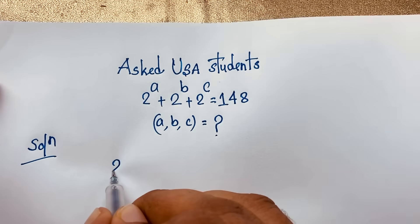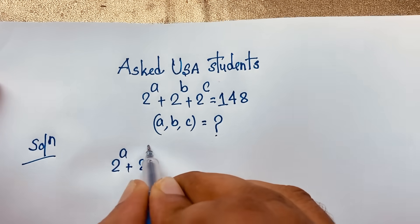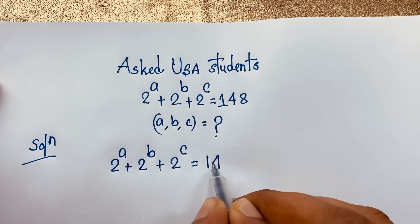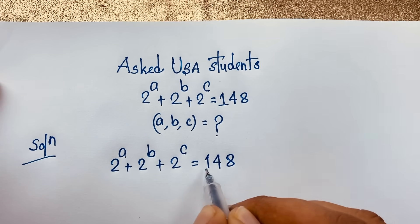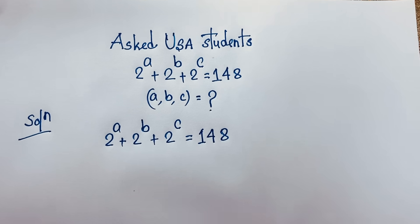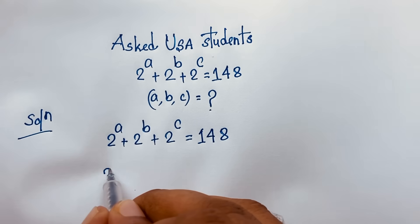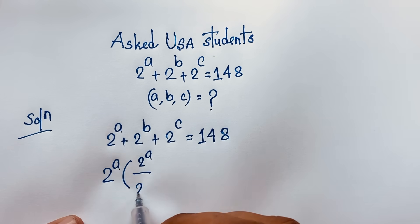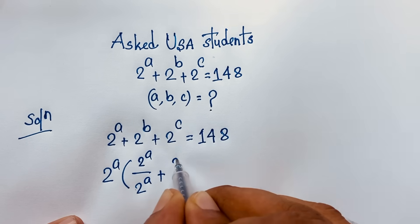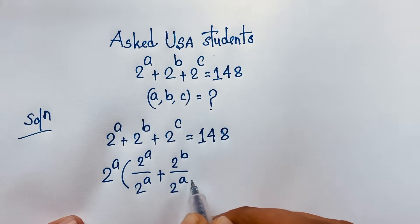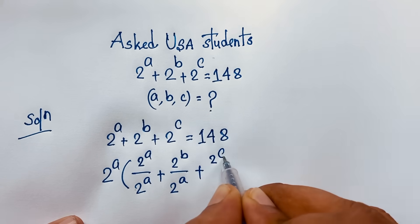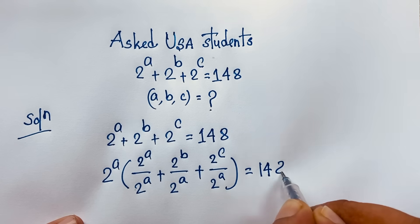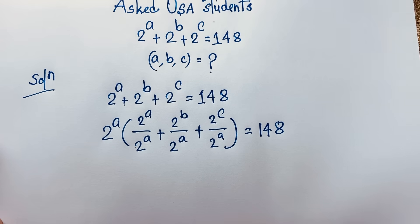Our question is 2 to the power a plus 2 to the power b plus 2 to the power c is equal to 148. First of all, I take 2 to the power a as common. So: 2 to the power a times (2^a / 2^a + 2^b / 2^a + 2^c / 2^a) is equal to 148. I solve this step by step.